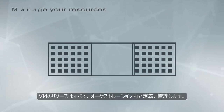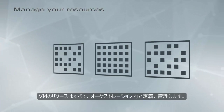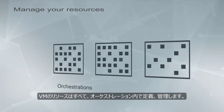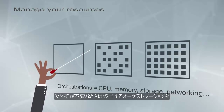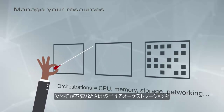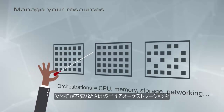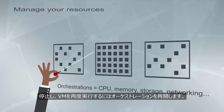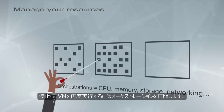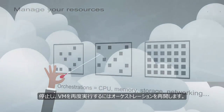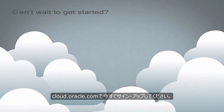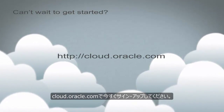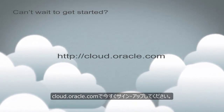You define and manage all VM resources in orchestrations. When you don't need a set of VMs, simply stop the relevant orchestration and restart it when you want the VMs running again. Sign up now at cloud.oracle.com.